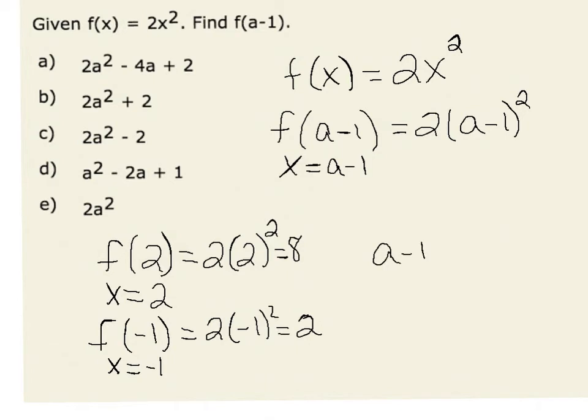Well, let's look at what a minus 1 quantity squared would be. This is the same as multiplying a minus 1 times a minus 1. Using the distributive property, often called the FOIL method,